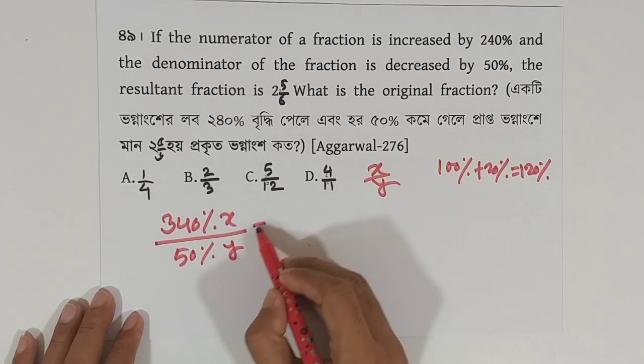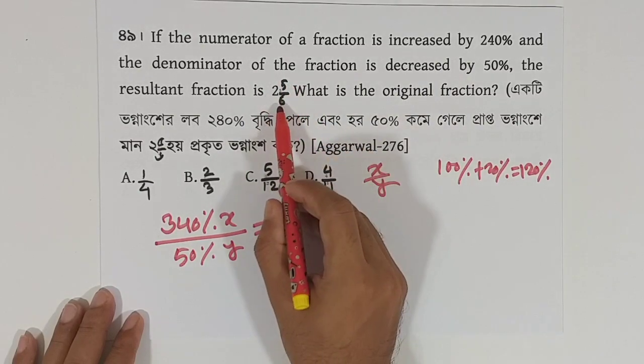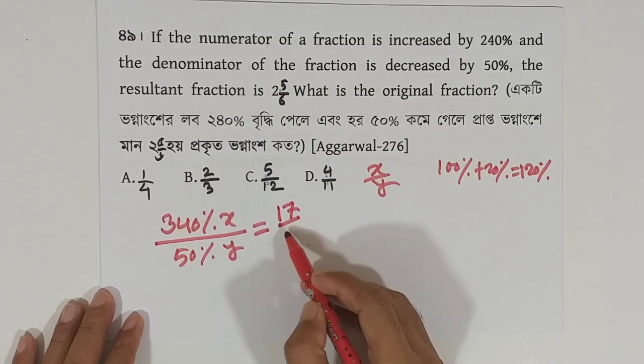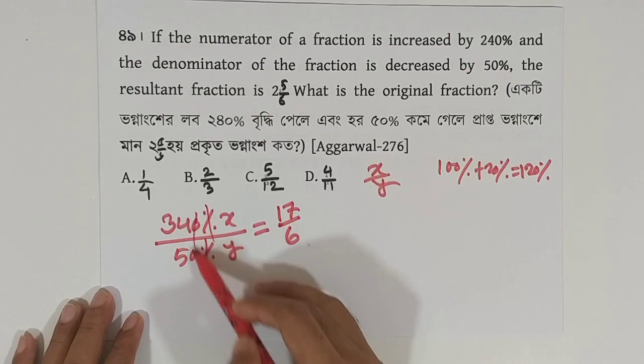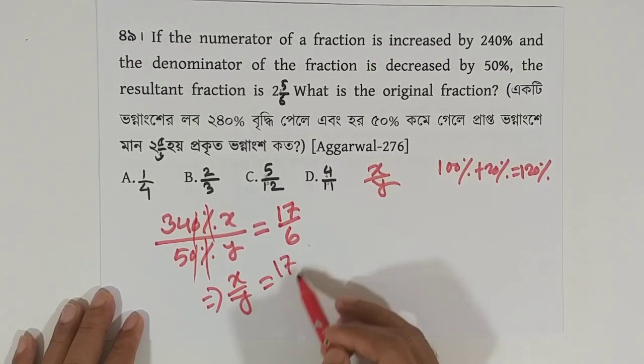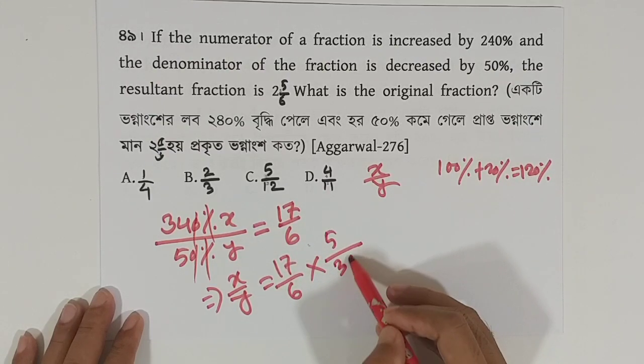The result of the fraction is 6, 5. So, the denominator of the fraction is 6, 6 divided by 6.